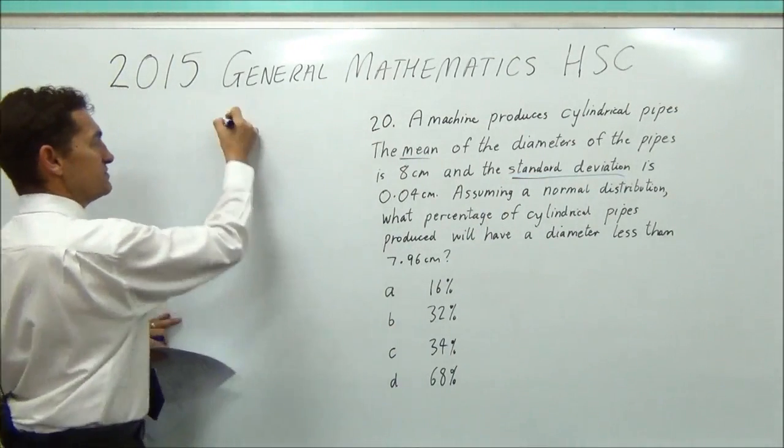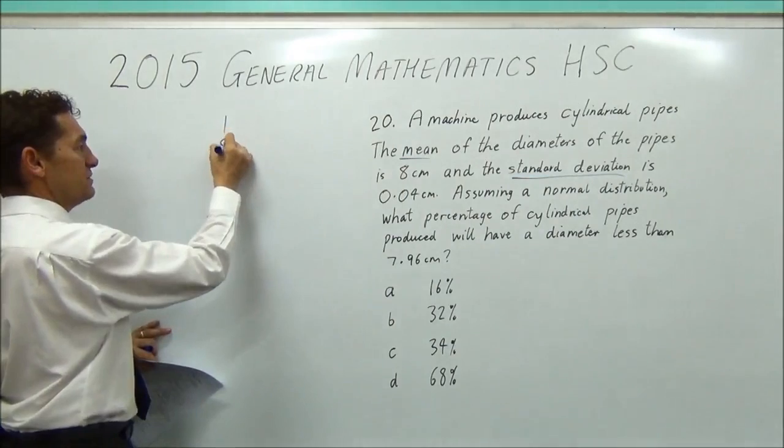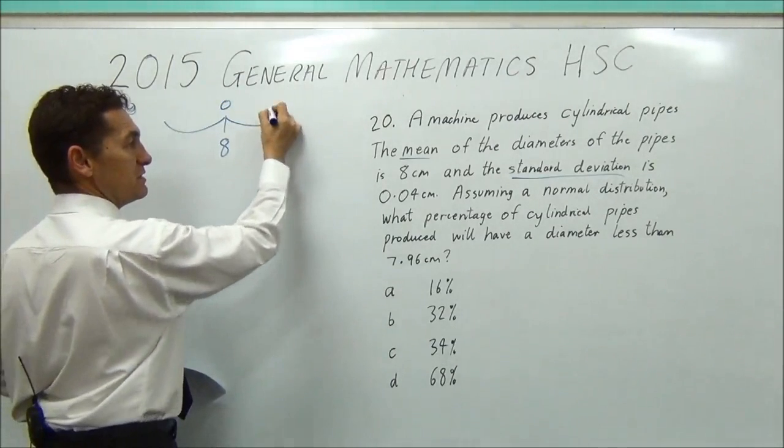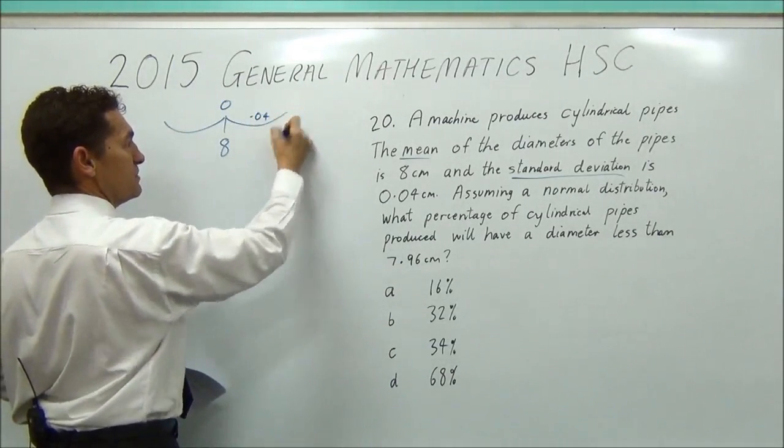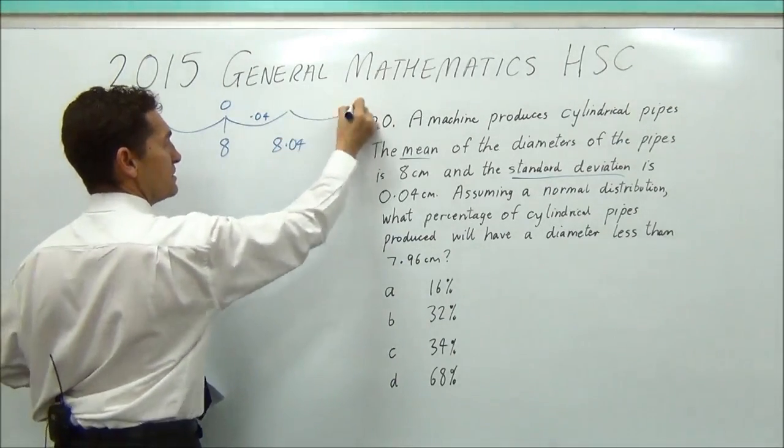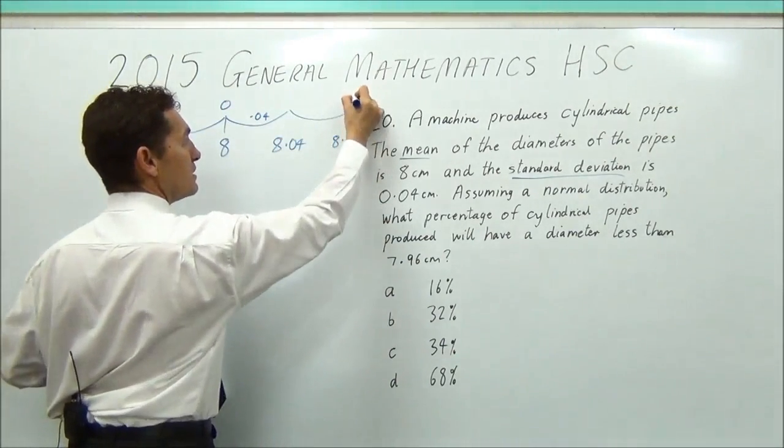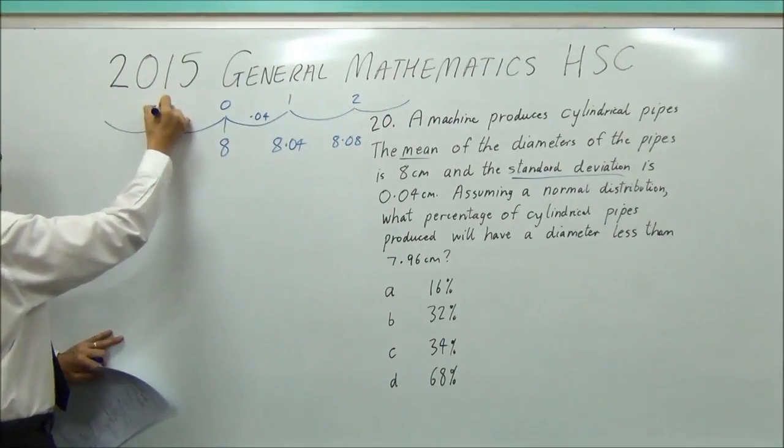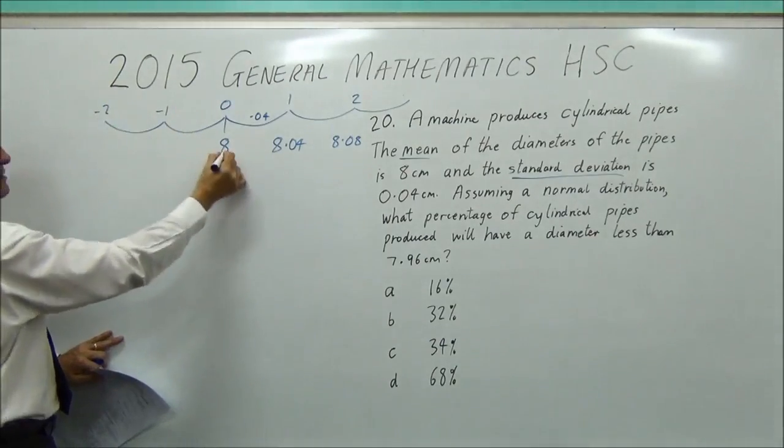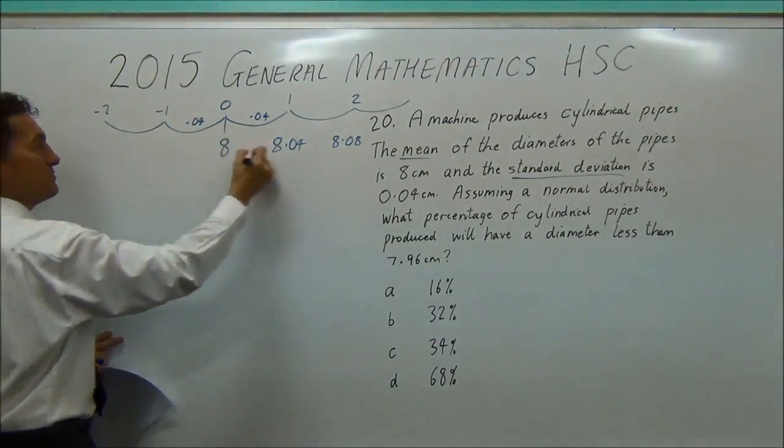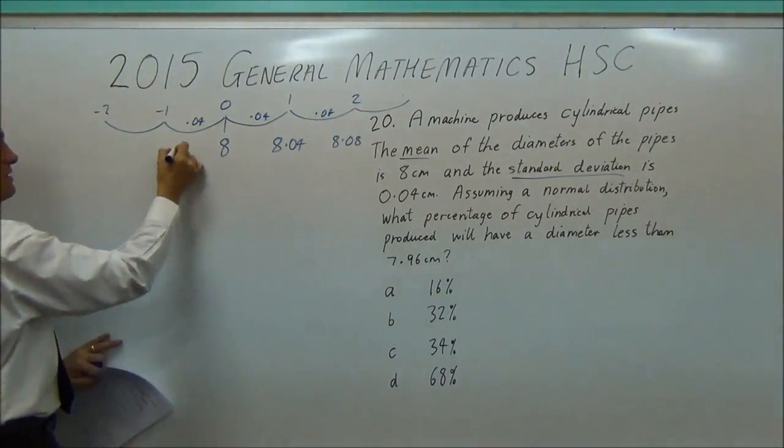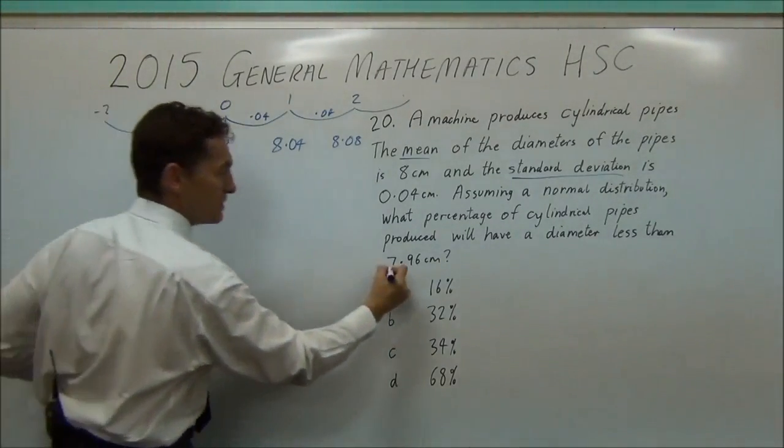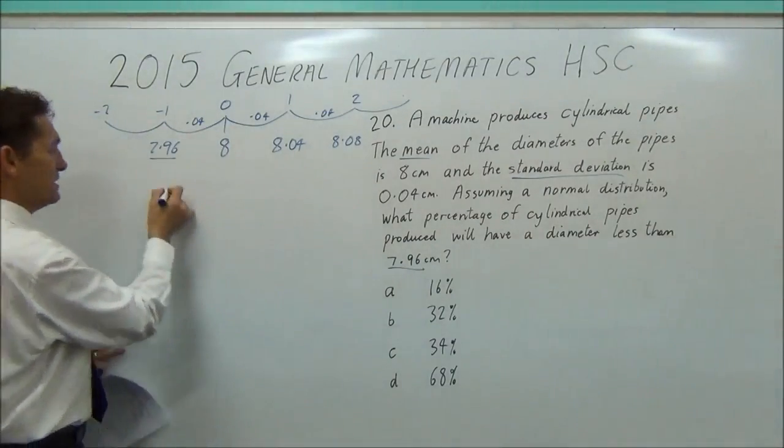So when you get a question that mentions mean and standard deviation, you should be thinking in terms of what I call a butterfly diagram. So here's your mean, which has got a z-score of 0. And then every time you go out in your little butterfly outlets, you're going out 0.04. So if I go positive, I'm going to 8.04. If I go again, I'm going to 8.08. That's a z-score of 2, z-score of 1. You can go out another one, but I won't fit it on this diagram. And then minus 1, minus 2. And we take it off. We're going to take off 0.04, 0.04, etc. And we get 7.96. And that's our target number. We want that number right there. What percentage will be less than that?